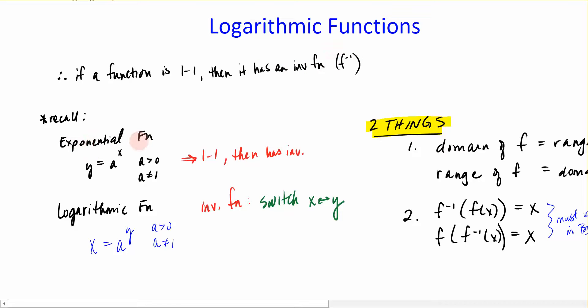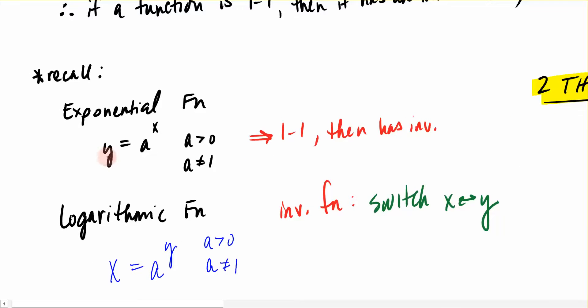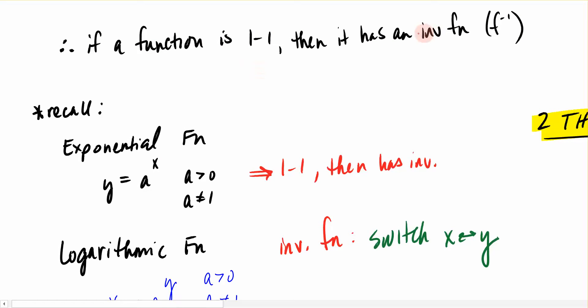And we know from the last section that when we have an exponential function, such as y equals base a to the x, we said that that function was one-to-one. And because of our definition of inverse functions, we know if something is one-to-one, then it has an inverse.